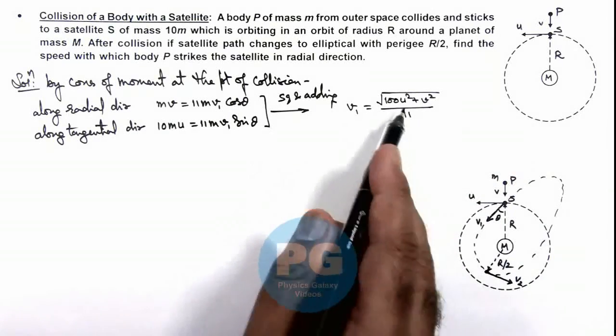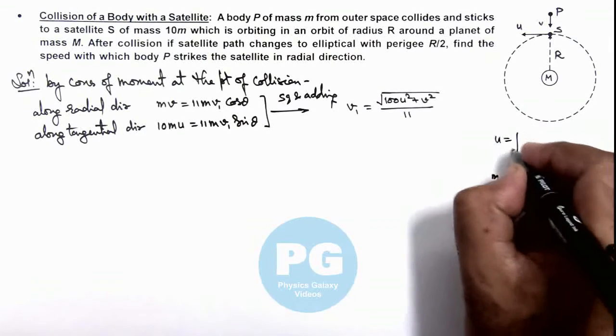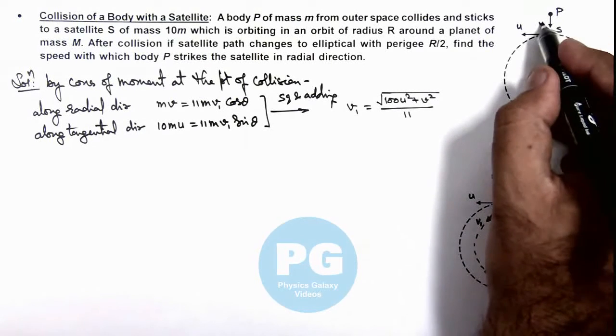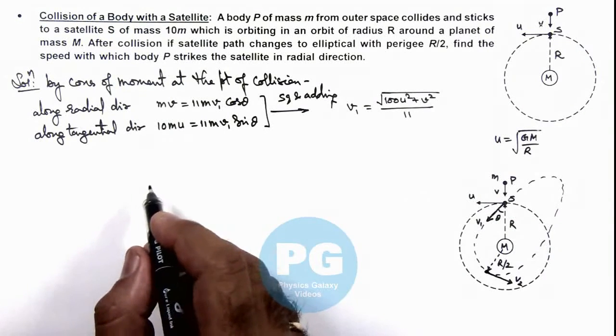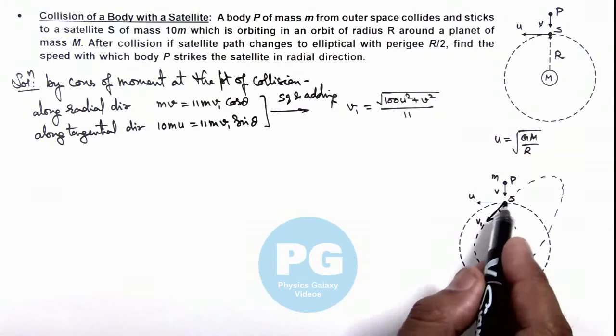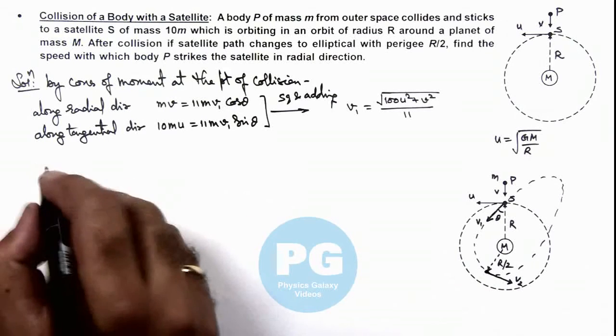The value of u is already having the orbital speed of motion which is root of GM by R, but we are required to find the speed v with which body P is striking the satellite. So here we can also conserve angular momentum of this combined body when it is in elliptical path.